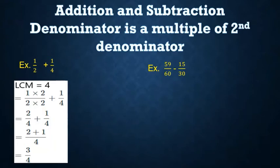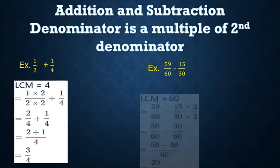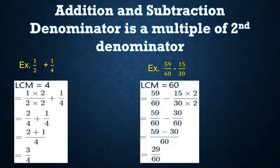For subtraction, we take 59/60 - 15/30. The LCM of 60 and 30 is 60. So it becomes 59/60 - (15×2)/(30×2) = 59/60 - 30/60. Since 59 - 30 = 29, the answer is 29/60. Therefore, 59/60 - 15/30 = 29/60.